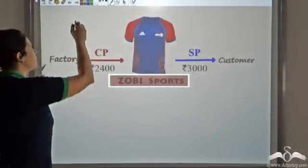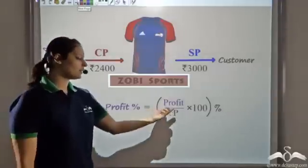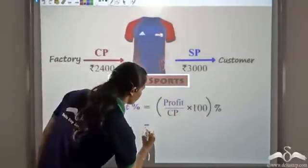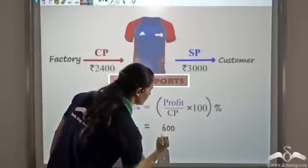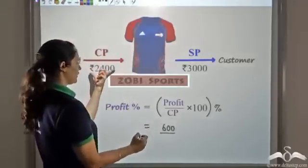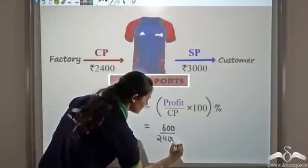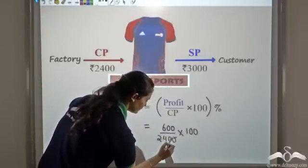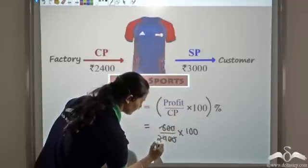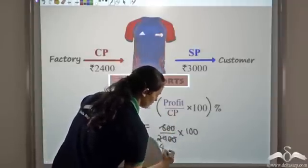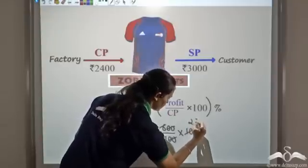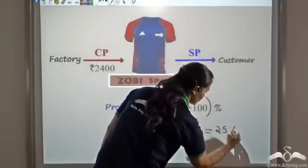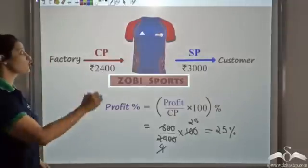Similarly we can find the profit percentage. We define profit percentage as profit upon CP into 100. Profit we know is 600 rupees, cost price we know is 2400 rupees, times 100. Simplifying — 600 divided by 2400 times 100 — gives us that profit percentage is 25 percent. So we get the profit percentage for Zobie Sports is 25 percent.